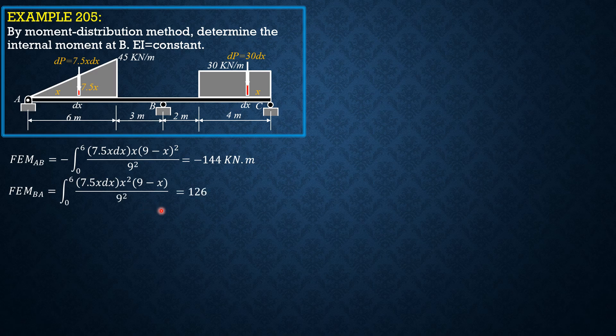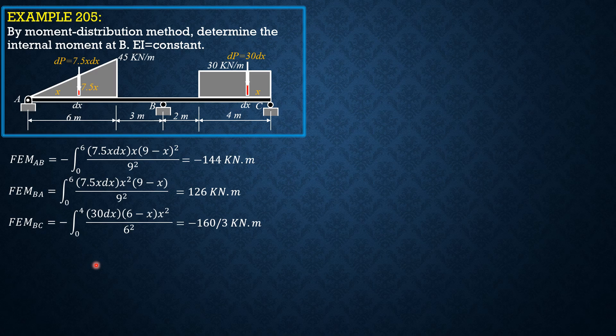For AB, fixed-end moment BC is negative integral 30DX, this is 6 minus X times X squared over 6 squared, 0 to 4. So it is negative 160 over 3 kilonewton meter.